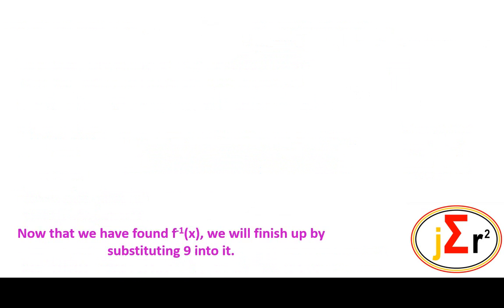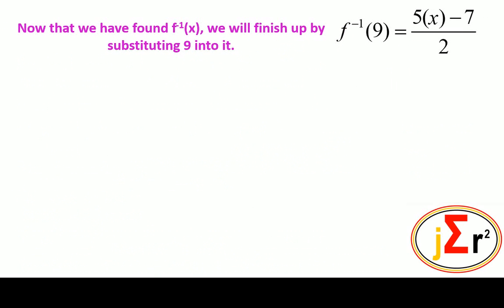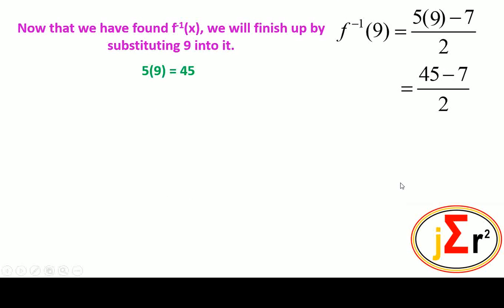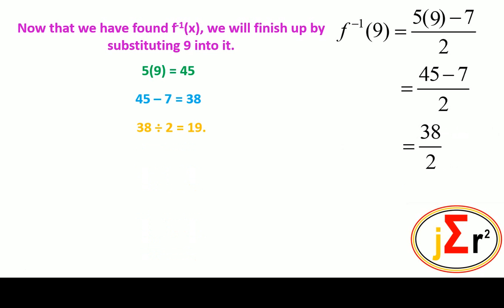We have our inverse function. Now that we have found f⁻¹(x), we will finish up by substituting 9 into it to find f⁻¹(9). We substitute 9 into f⁻¹(x) and simplify: 5 × 9 = 45; 45 − 7 = 38; 38 ÷ 2 = 19. And we are done.